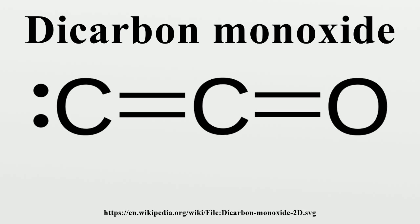It is classified as a cumulene in an oxocarbon occurrence. Dicarbon monoxide is a product of the photolysis of carbon suboxide: C3O2 gives CO plus C2O. It is stable enough to observe reactions with NO and NO2.